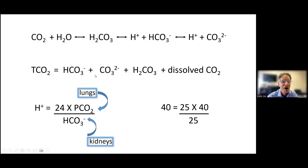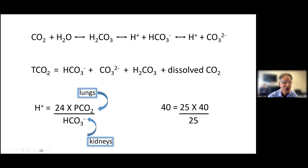The total CO2 is the sum of all four species, but we only care about the bicarbonate — which is the majority — and the dissolved CO2. So if the total CO2 is 26, about 25 millimoles per liter will have come from bicarbonate and another approximately one millimole per liter from carbon dioxide. You can see this can change either because the bicarbonate changed or the dissolved carbon dioxide changed.